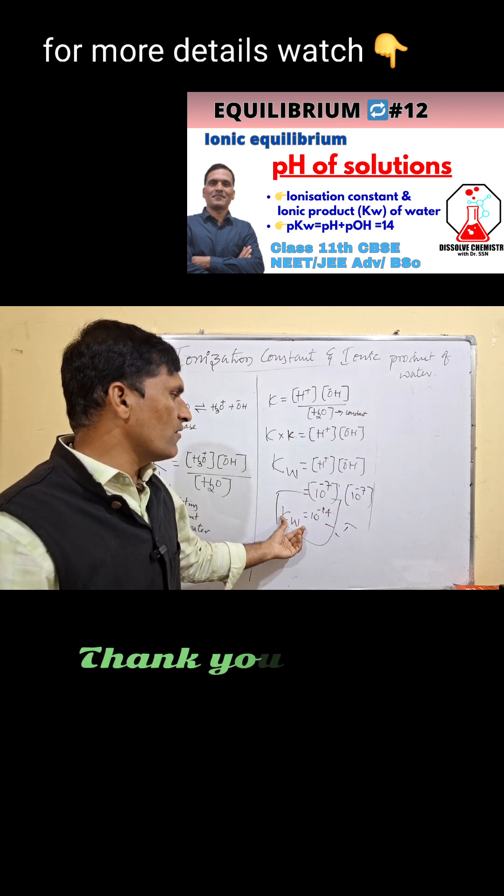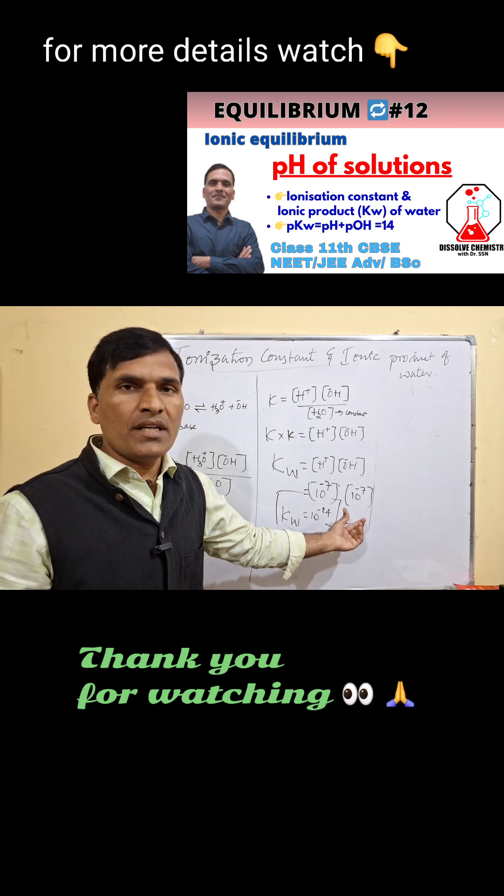Therefore, the ionic product of water will always be 10 to the power minus 14, and it is a constant.